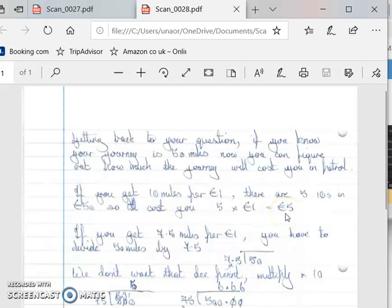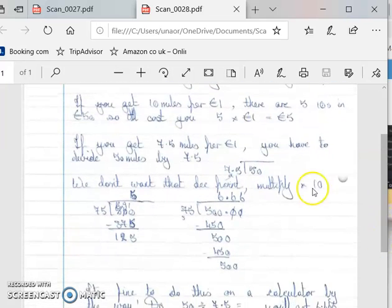If however you get 7.5 miles per euro, then you have to divide your 50 miles by 7.5.